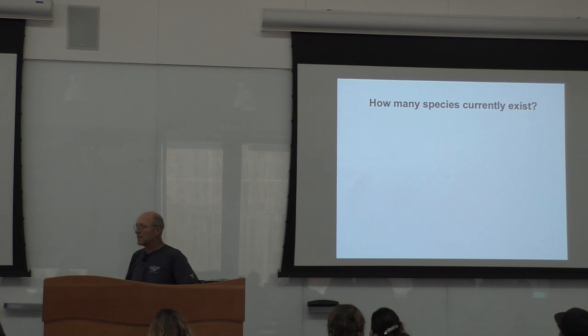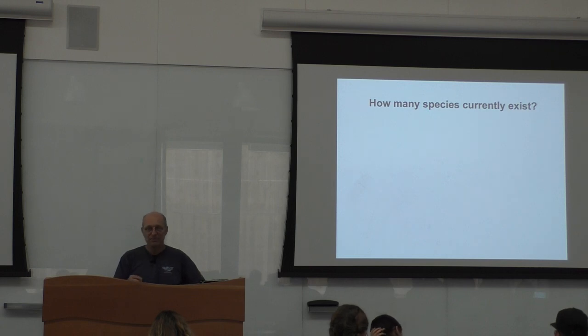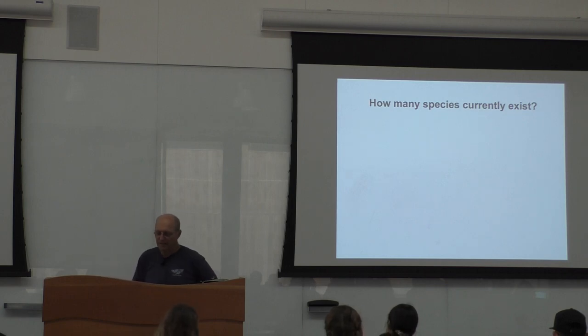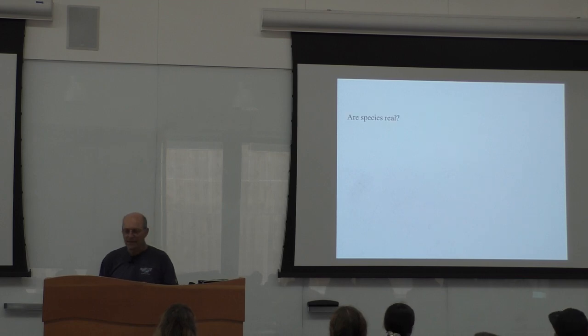Before we go into species concepts, the reason why species concepts are important is because once you define what a species is, then you can define how many there are and what to protect, if protection is something that you are interested in. But even before going there, there are two big camps in science or in life maybe. It's like in a cage, you know, I trust only two people. One is here, the other one is not here. So, that's the same idea. So, the first one is, are species real?